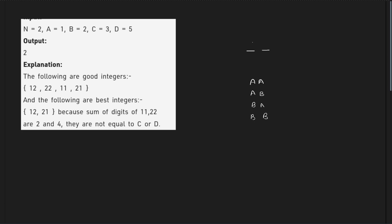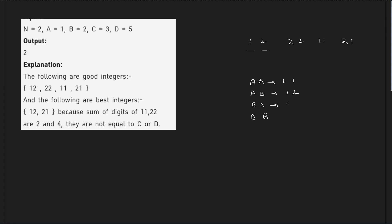In this case with a=1 and b=2, the good integers are: 11, 12, 21, and 22. If we take the sum of their digits: 1+1=2, 1+2=3, 2+1=3, and 2+2=4.